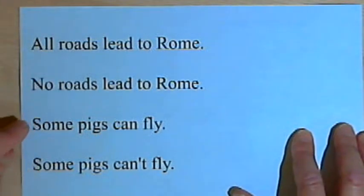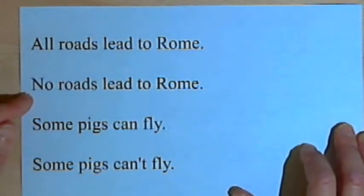If you're starting out with some, you may use all, as in some pigs can't fly, so all pigs can fly would be the opposite. Some pigs can fly, the opposite would be no pigs can fly.